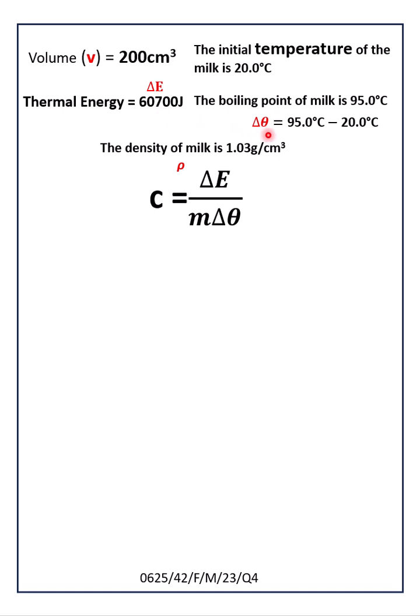Delta theta, that is the temperature difference, is 95.0 degrees Celsius minus 20.0 degrees Celsius. Then m - m is not given in the question.